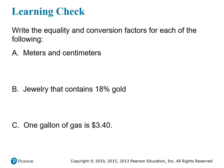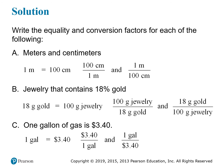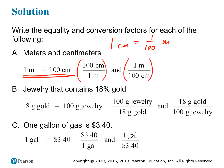For this learning check, try to write the equality and the conversion factors for each of the following situations: a conversion from meters to centimeters, jewelry that contains 18% gold, and one gallon of gasoline that costs $3.40. The first one is a metric relationship between meters and centimeters. From the centi prefix, we know that one centimeter equals one one-hundredth of a meter. We can rearrange this to the familiar expression that one meter equals 100 centimeters. From this relationship, the conversion factors are 100 centimeters per one meter, or one meter per 100 centimeters.